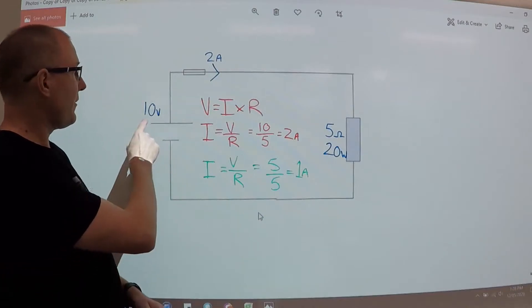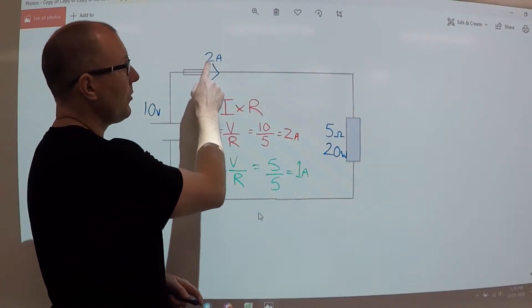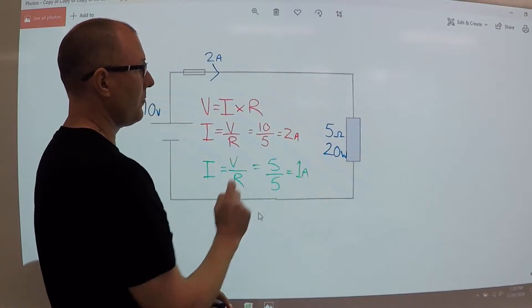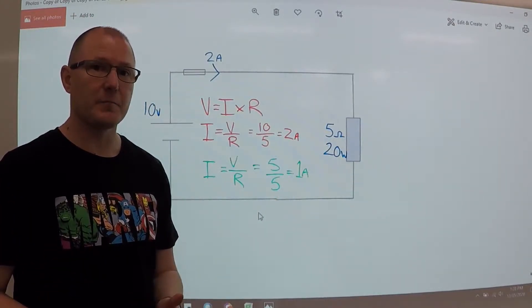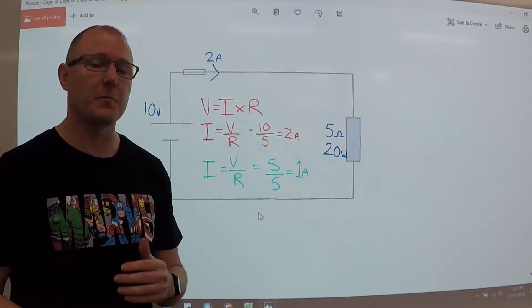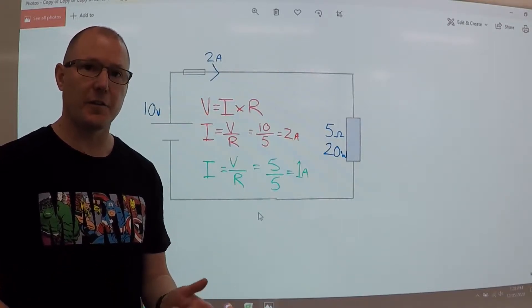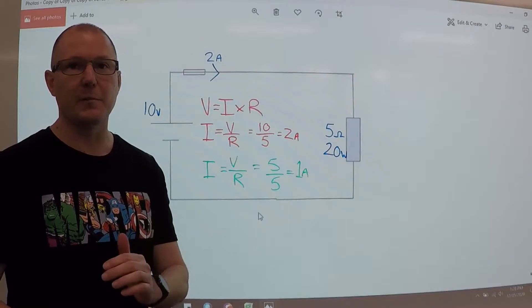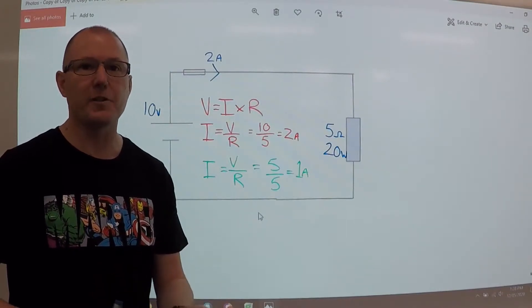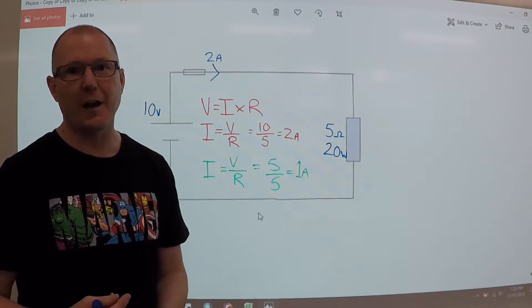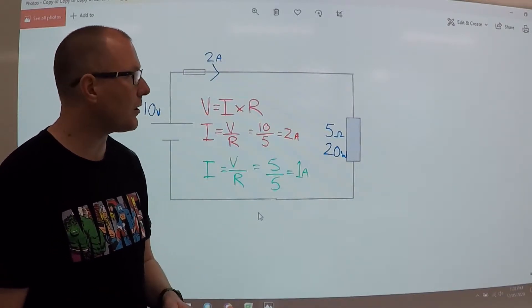For example, we have 10 volts in a circuit, 2 amps and 5 ohms. Now first we'll focus on the current and voltage relationship. So remember that the current is directly proportional to the voltage. So if we double the voltage, we double the current. If we halve the voltage, we halve the current. Let's see how this works.